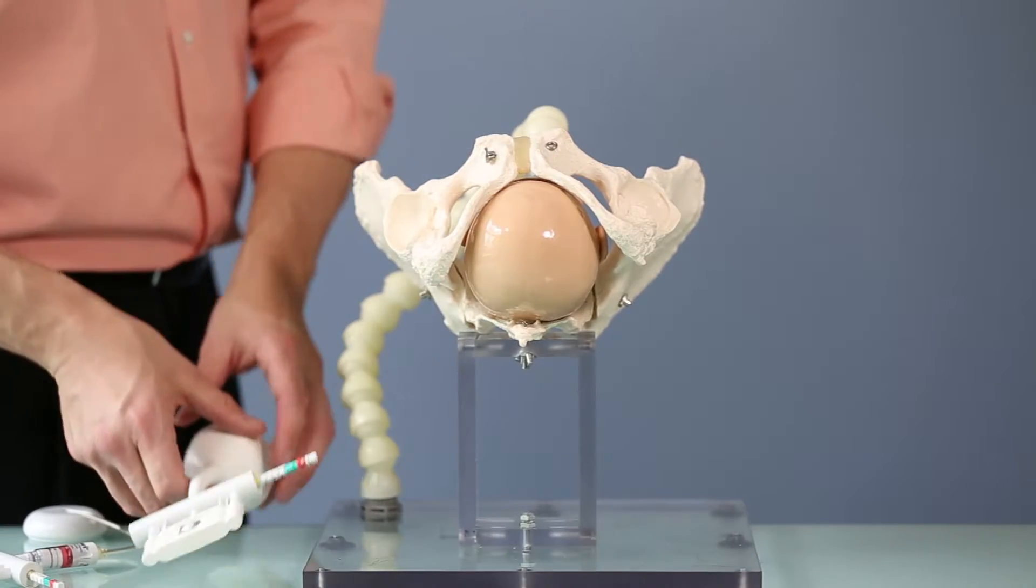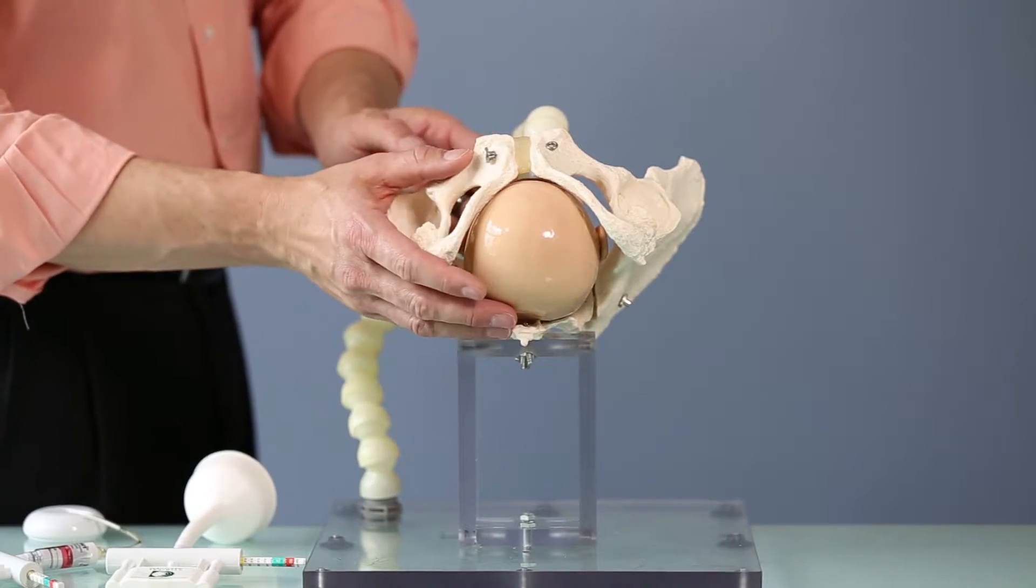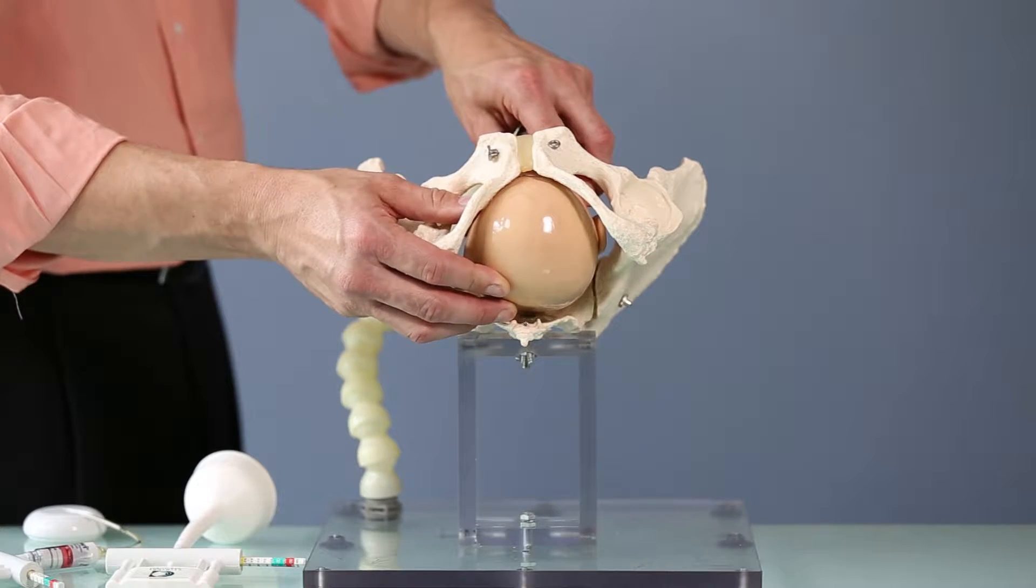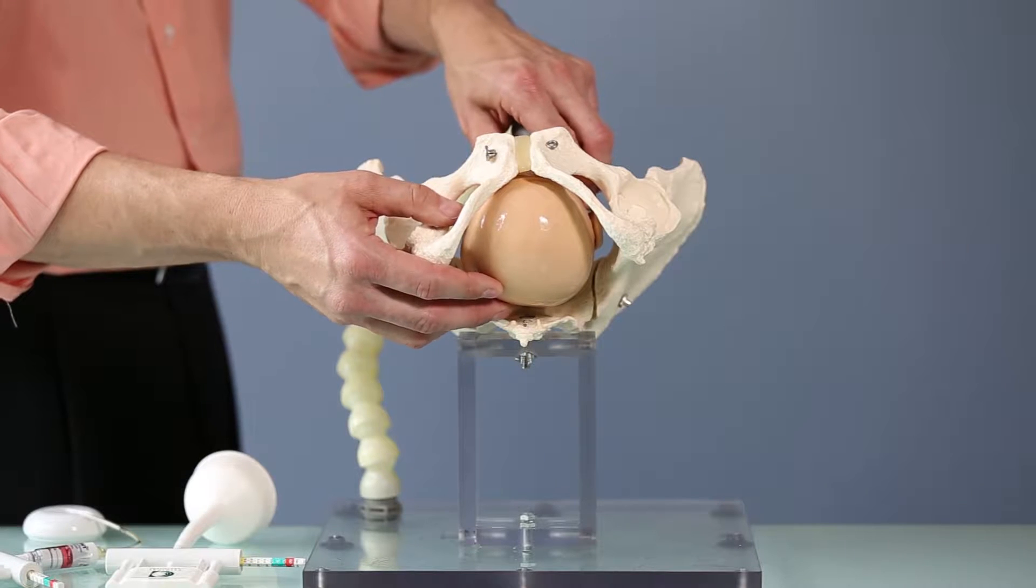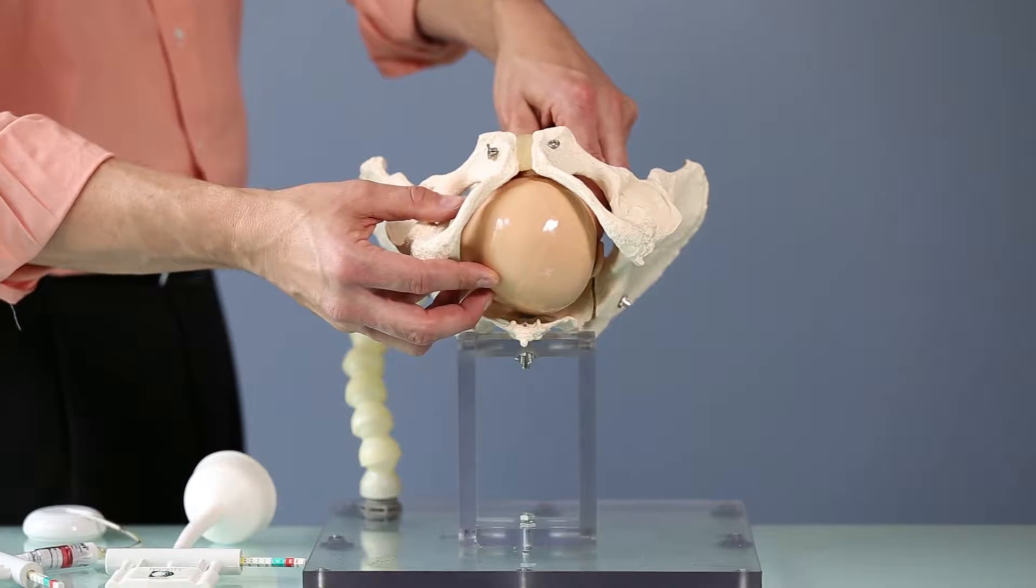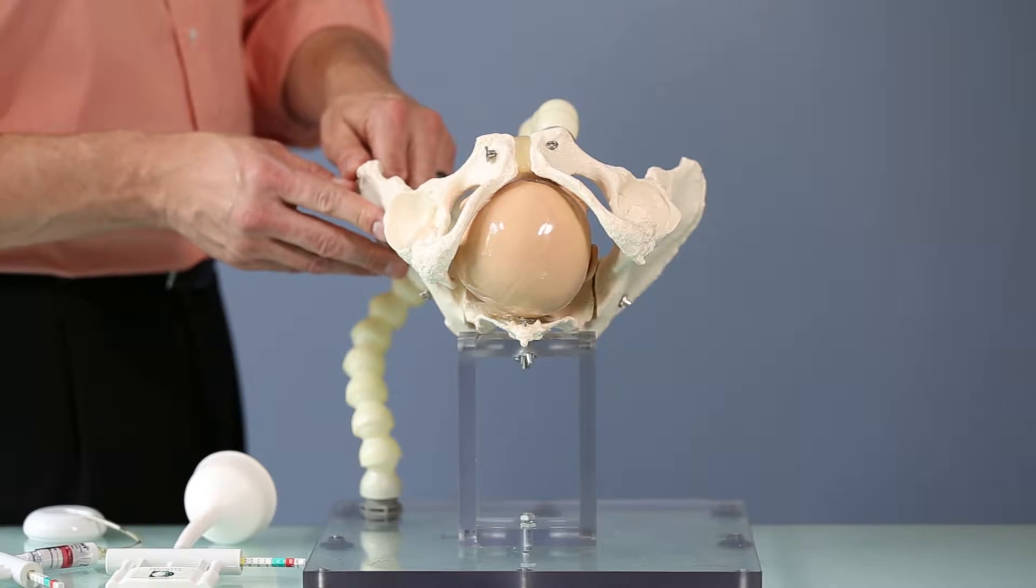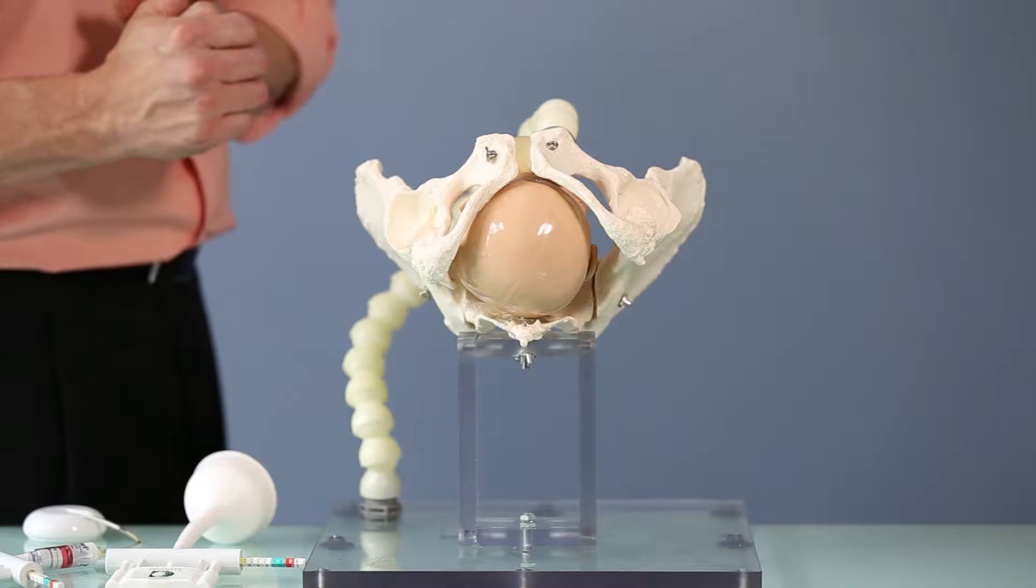As you know, babies who need our assistance rarely present straight occiput anterior at the outlet, but let's make it a little more realistic and put it in a low station and add just slight rotation so it is left occiput anterior. Now this is still a delivery in which I'd let my intern do,